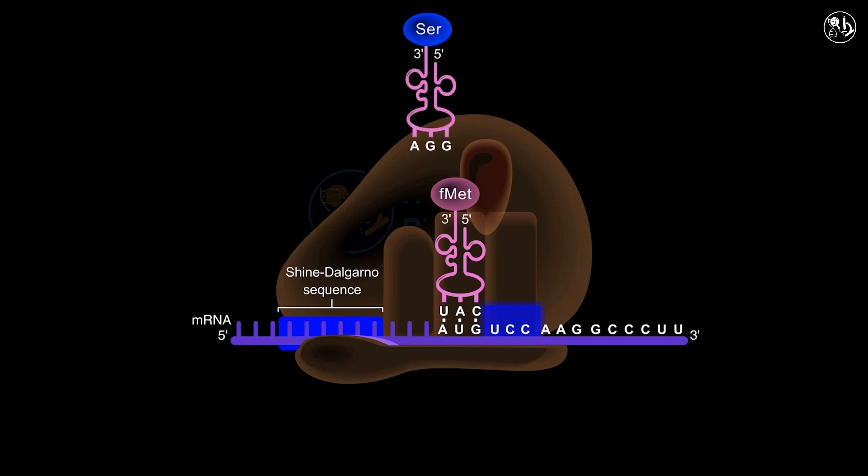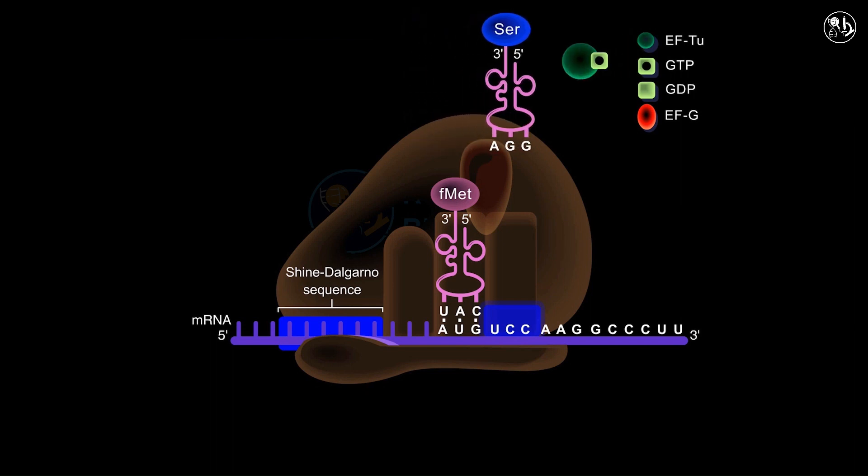In the cytoplasm, the tRNA carrying serine forms a complex with EF-Tu and GTP. The resulting aminoacyl-tRNA-EF-Tu complex makes its way into the A site where the tRNA's anticodon establishes hydrogen bonds with the UCC codon.